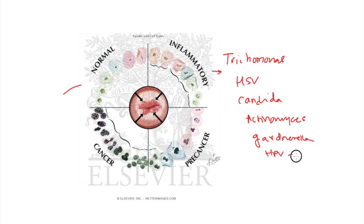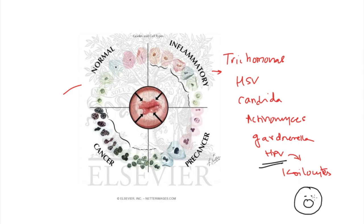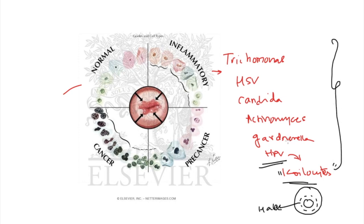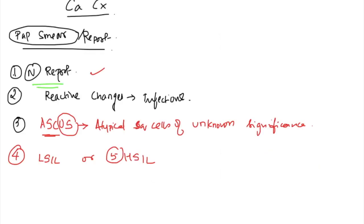For HPV infection, we see koilocytes - cells with a perinuclear halo, meaning there is perinuclear clearing in the cytoplasm. This is important because HPV is a risk factor for Ca cervix. If reactive cells appear on your pap smear report, treat the infection with antibiotics and then repeat the pap smear after the antibiotic course is completed.